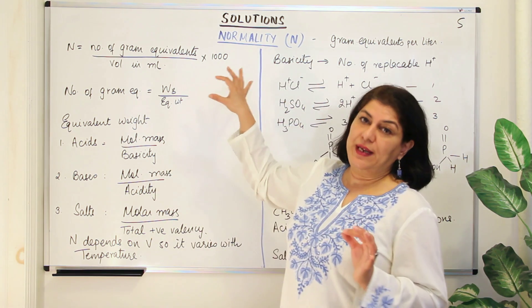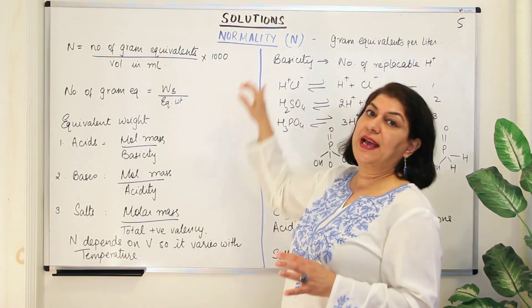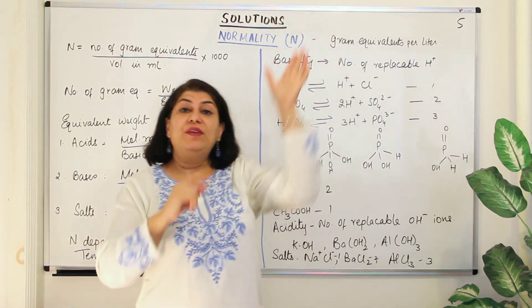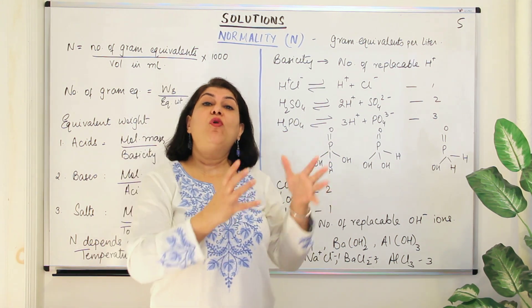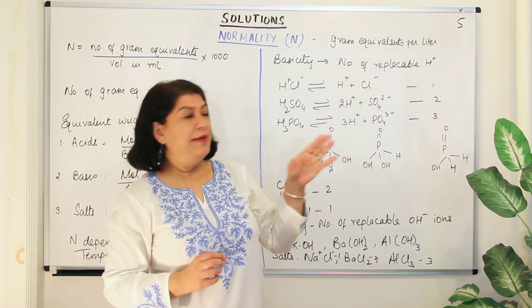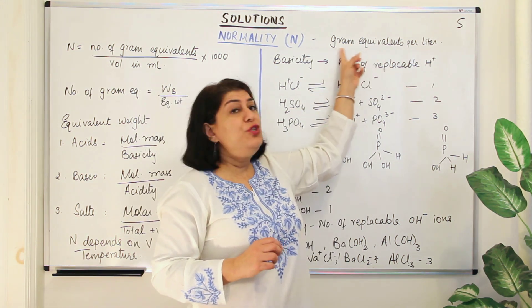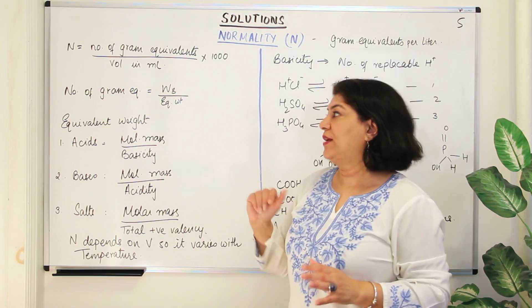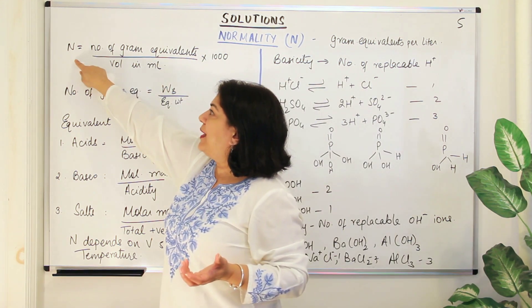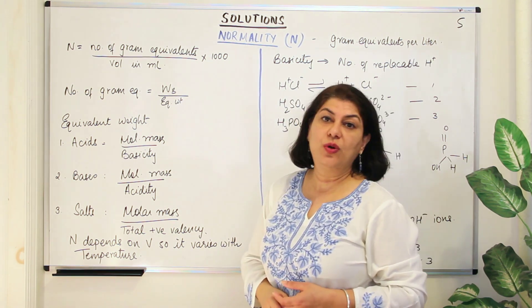So what is normality? Normality is expressed by the symbol N and its unit is also written as N. Just like in molarity we use capital M to mean moles per liter, we show normality with capital N, and its unit is gram equivalents per liter. The normality equation is: normality equals the number of gram equivalents divided by the volume in milliliters, multiplied by 1000.